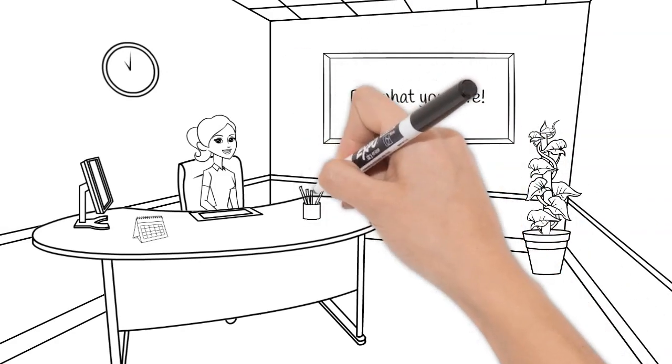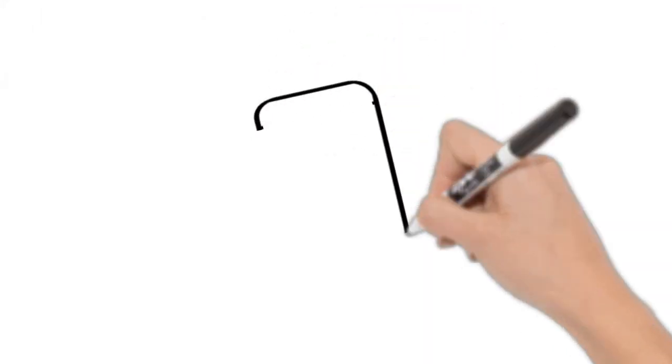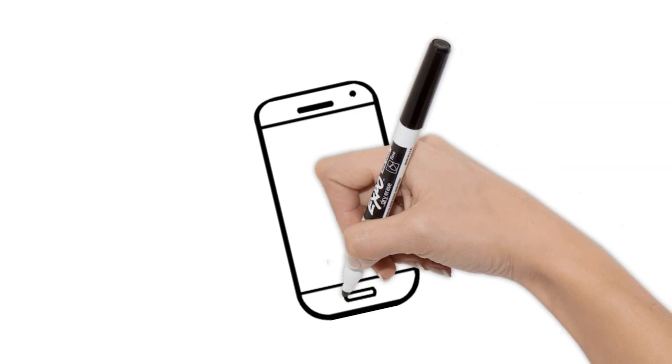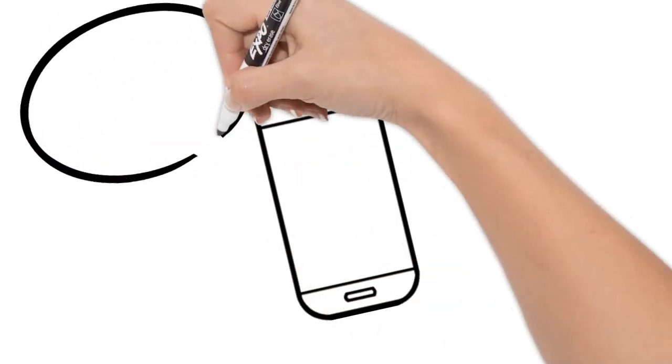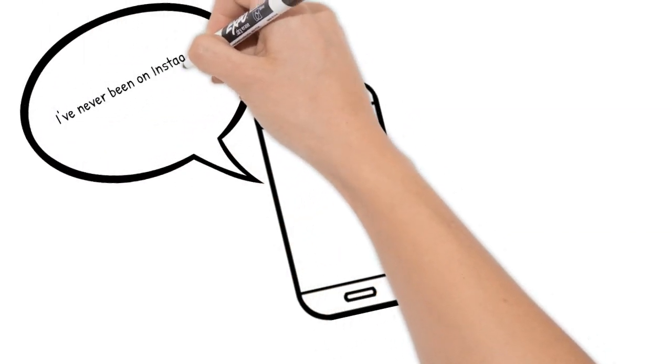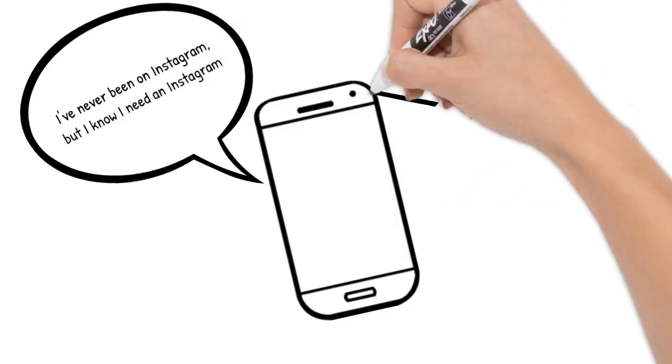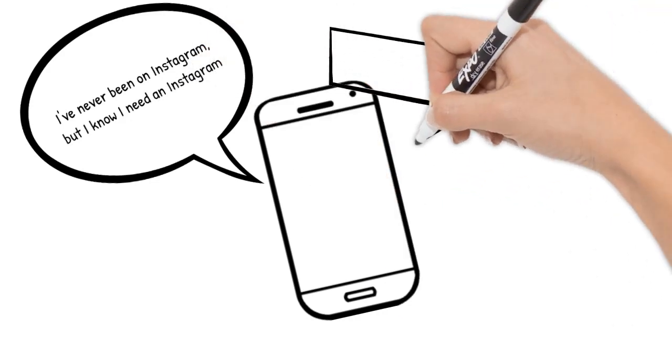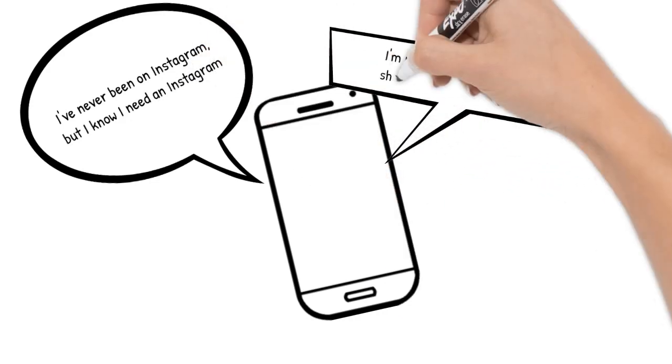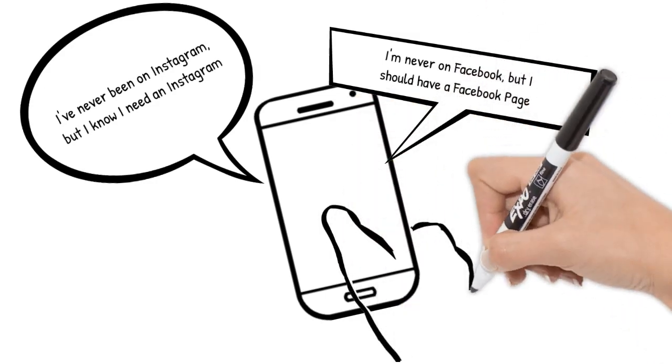And then you'll stand out to those people that also like that because so many people I talk to, they'll say, oh, I've never been on Instagram, but I know I need an Instagram. And I'm never on Facebook, but I should have a Facebook page. And if you're not on there, you're going to attract a lot of people that like Instagram and like Facebook and you don't like those things. So why would you want to attract those people?